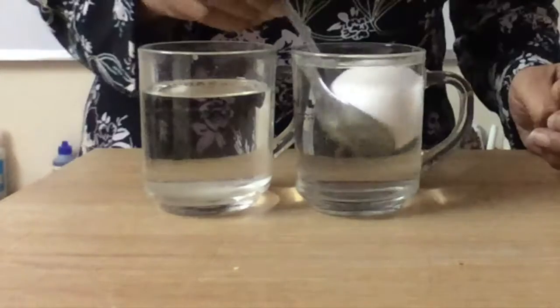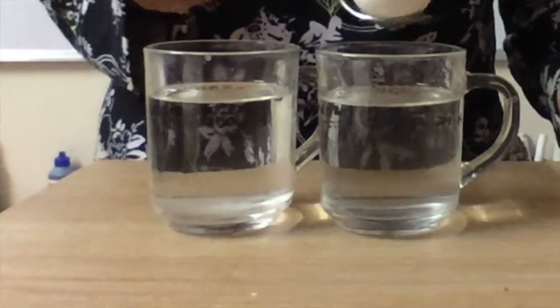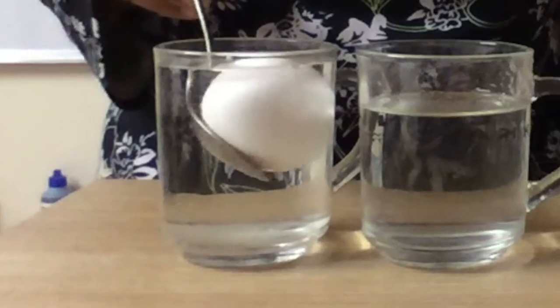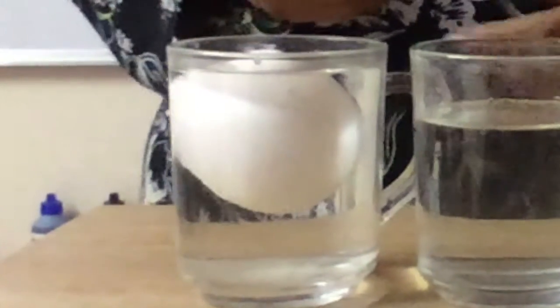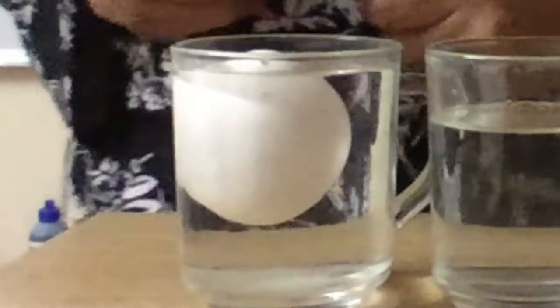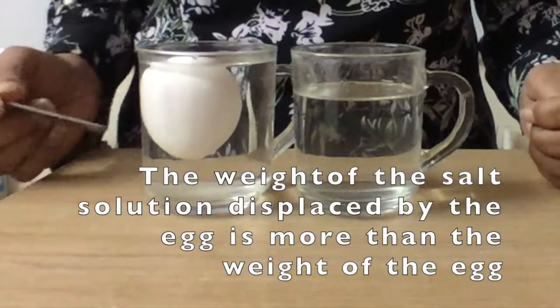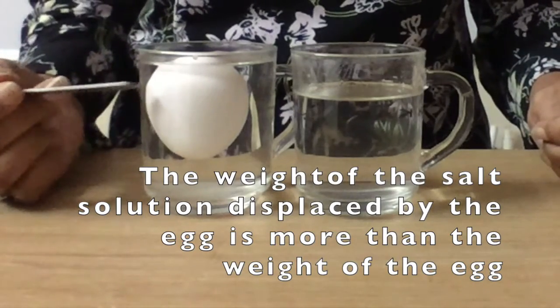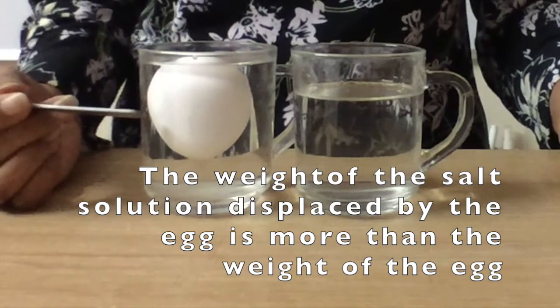Now if I remove from here and now I am going to place it in this salt solution. Can you see what is happening? It is floating. Why is it floating? It is floating because the volume of the salt solution that is displaced by the egg, the weight of it is going to be more.